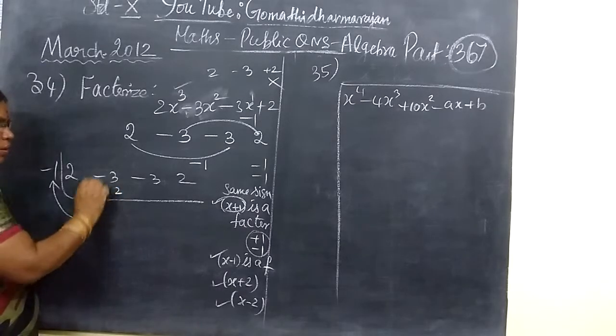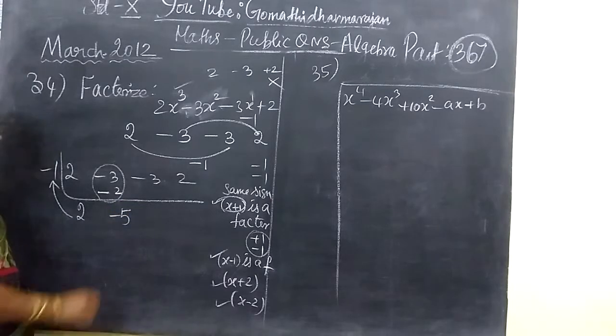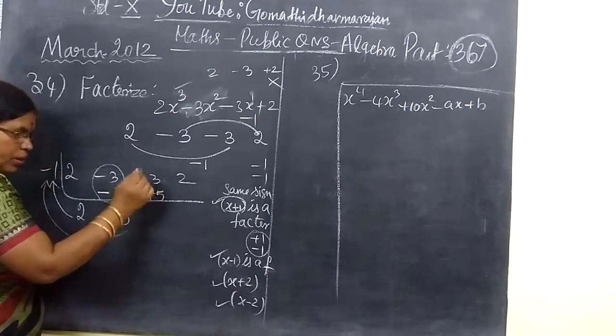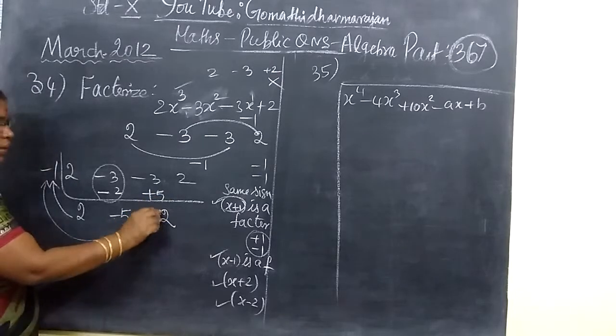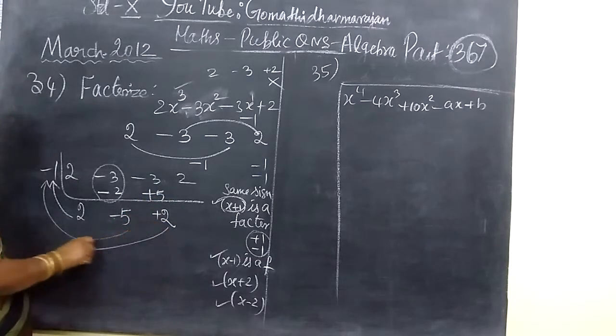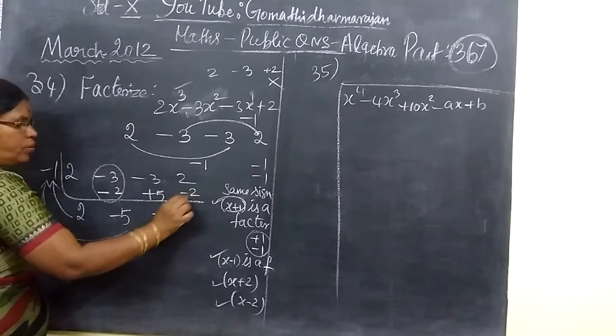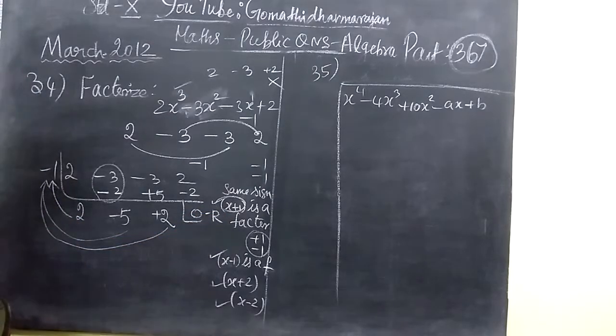The same sign, add and put greater number sign. Now multiply this. Here minus minus 1 plus it, then 1 into 5 is 5. Put greater number 5, plus it. Then multiply this: 2 into minus 1, minus 2. Multiply that, the remainder is 0, otherwise it is wrong.